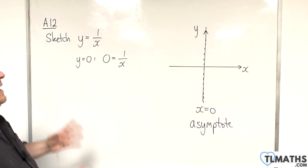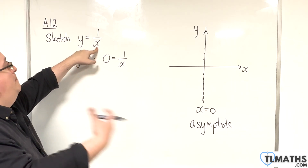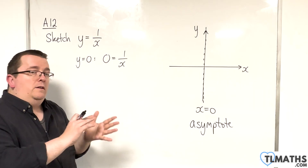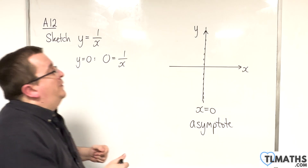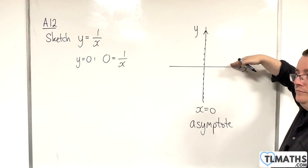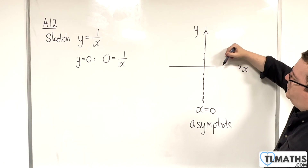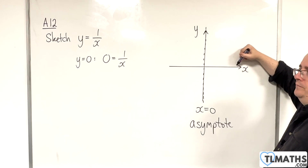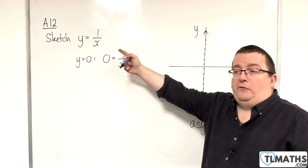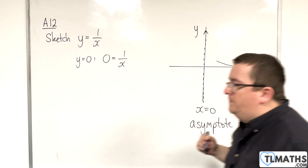If you consider when x gets very large — say 100, 1,000, or 1,000,000 — the curve is going to approach the x-axis but never reach it, because we know there are no solutions. The curve tends towards the x-axis from above, and it is positive because when x is positive, 1 over 100 is positive. So the curve is above the x-axis and tending towards it.